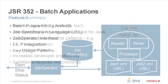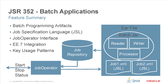We're going to continue our exploration of JSR 352 by taking a look at some of the key features it offers. It introduces a set of batch programming artifacts — things like readers, writers, and processors — key constructs used to assemble batch applications. It includes a job specification language, or JSL for short, which describes how a batch application should run. It also includes a job operator interface, which provides a programmatic means to interact with running jobs.